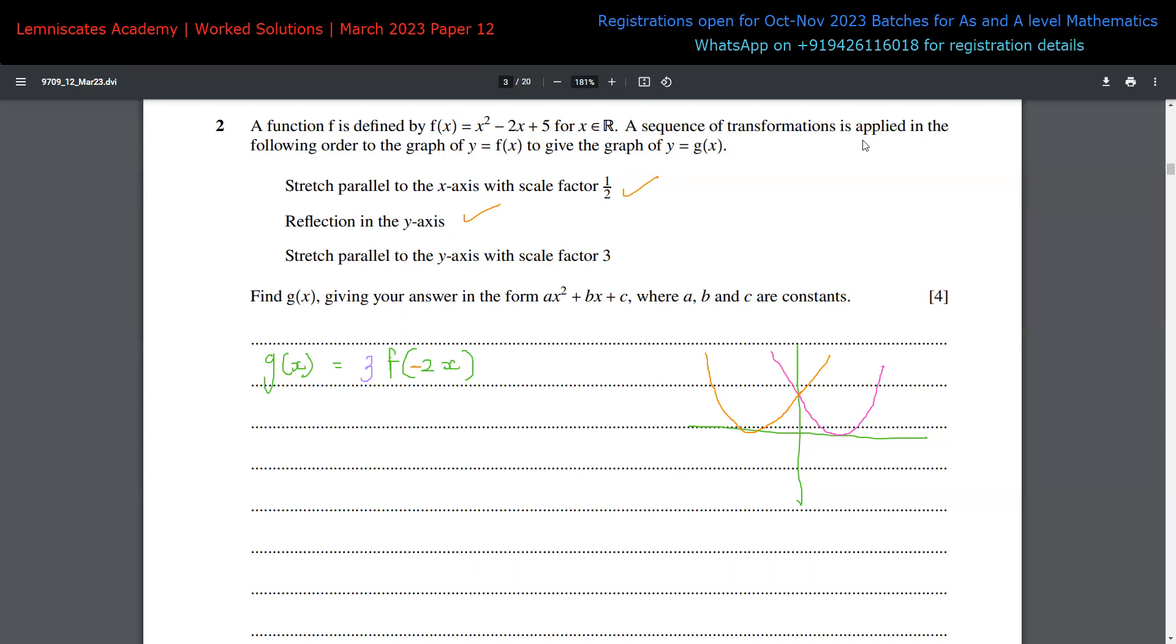So your g(x) is nothing but 3 times function where inputs are now changed from x to minus 2x. So that's your g(x). So we can now go ahead and expand this. If we do that, we are going to get therefore g(x) is equal to let's keep 3 out.